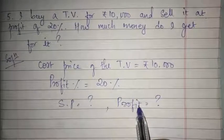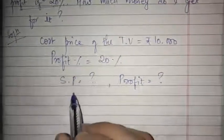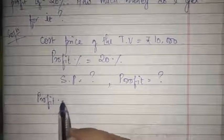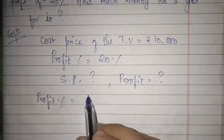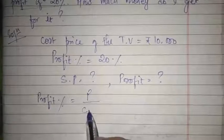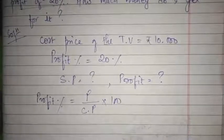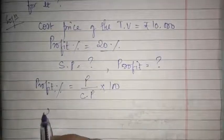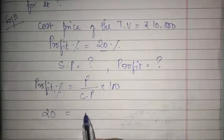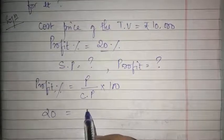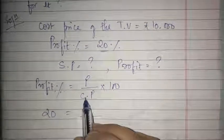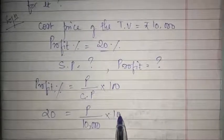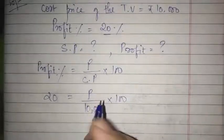We have profit percentage, not profit, so we use the profit percentage formula first. The formula is: profit% = (P ÷ CP) × 100. Profit percent is given as 20, P is unknown, and CP is 10,000. So: 20 = (P ÷ 10,000) × 100.